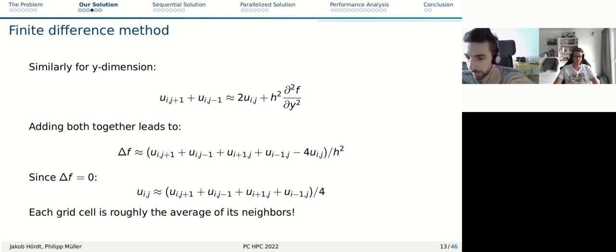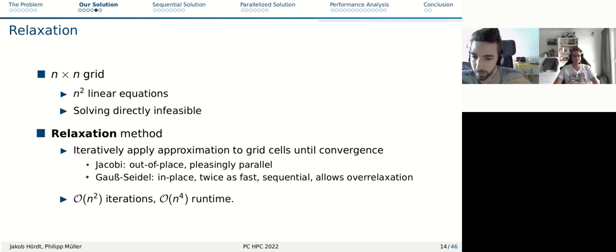If we add the approximation in the y and the x dimension together, this leads to this approximation that the Laplace operator is this, and since the left side of this is zero, we can reformulate this equation where the center point can be approximated by simply the average of its neighbors. That's really the most important takeaway: the center point can just be approximated as the average of its surrounding neighbors.